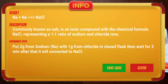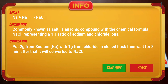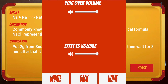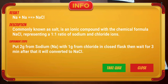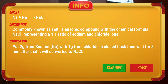Sodium chloride, commonly known as salt — although sea salt also contains other chemical salts — is an ionic compound with the chemical formula NaCl, representing a one-to-one ratio of sodium and chloride ions. 100 grams of NaCl contains 39.34 grams Na.